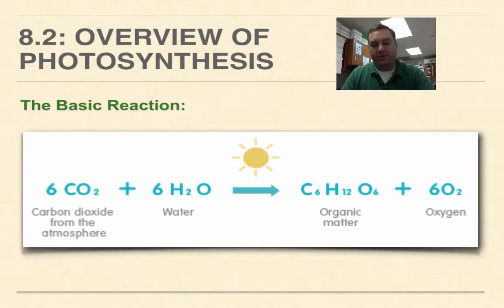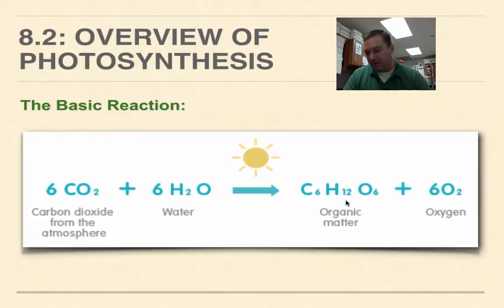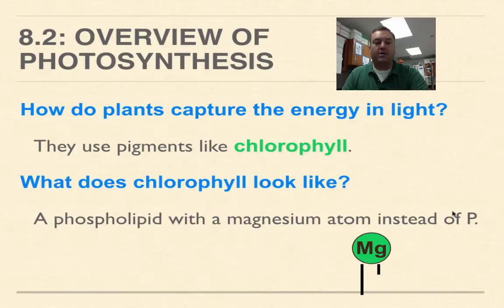The overview of photosynthesis comes down to this classic chemical equation: six molecules of CO2 combine with six molecules of H2O, and with the help of light, that produces glucose sugar and the waste product oxygen.